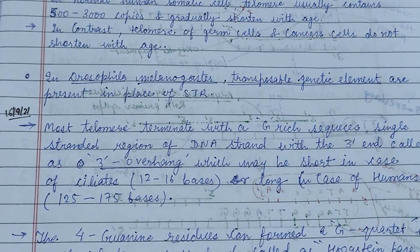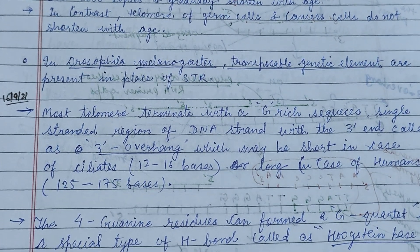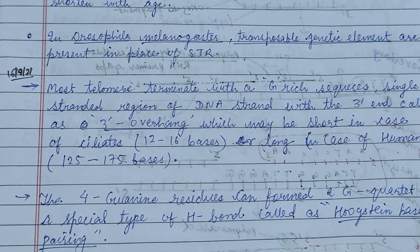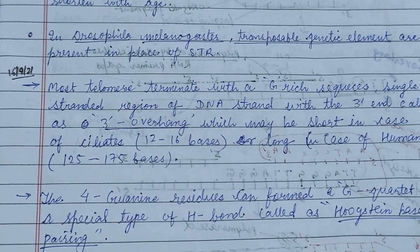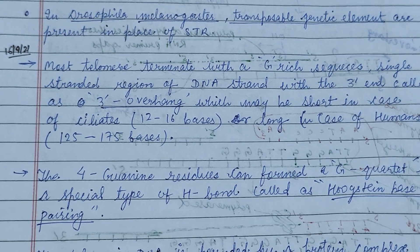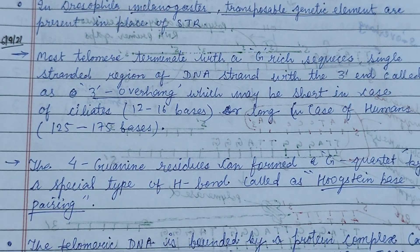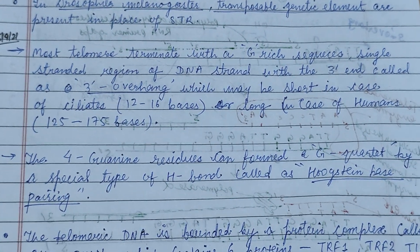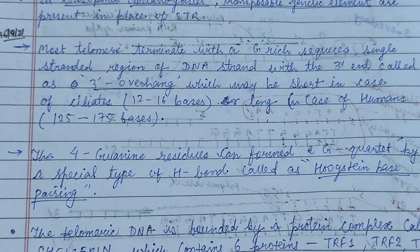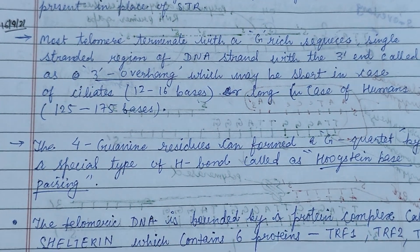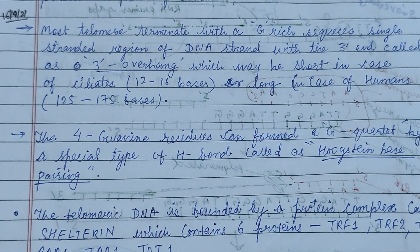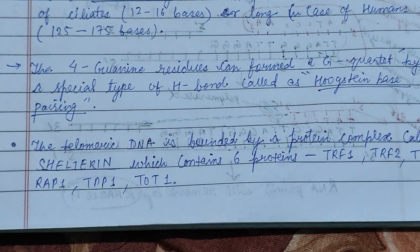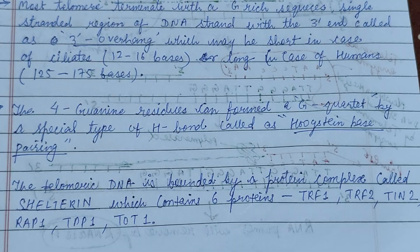Telomeres shorten with age. In Drosophila, transposable genetic elements are present in place of the simple tandem repeats. Most telomeres terminate with a G-rich sequence — a single-stranded region of DNA with a 3' overhang, which may be short in the case of ciliates and long in the case of humans.